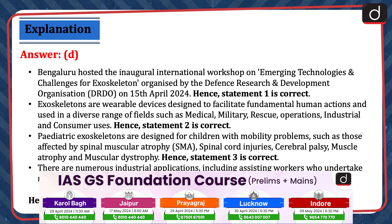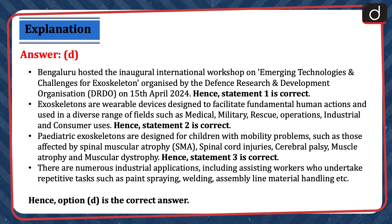Pediatric exoskeletons are designed for children with mobility problems, such as those affected by spinal muscular atrophy, spinal cord injuries, cerebral palsy, muscle atrophy, and muscular dystrophy. Hence, statement 3 is correct. There are numerous industrial applications, including assisting workers who undertake repetitive tasks such as paint spraying, welding, assembly line, material handling, etc. Hence, option D is the correct answer.